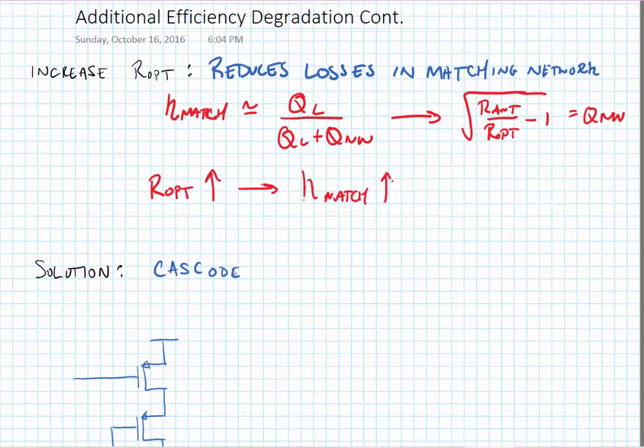Of course, we can't arbitrarily increase ROP because the output power depends upon ROP. So we have to do something else to the network in order to enable this.